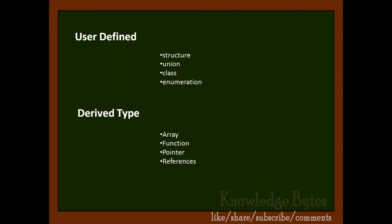Structure, union, class, enumeration, and function—these four categories are under user-defined, which we will discuss later. Derived types are derived from the built-in type and dual as user-defined type. Derived is the combination of built-in and user-defined. Array, function, pointer, and references—these four fall under derived type.